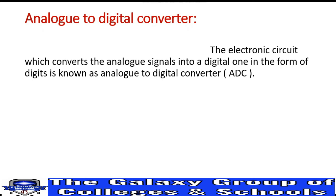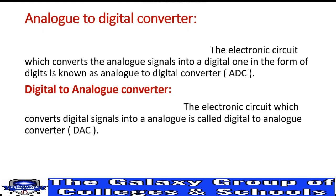Digital to Analog Converter: the electronic circuit which converts digital signals into analog signals is called a Digital to Analog Converter, abbreviated as DAC. We can also be asked the difference between ADC and DAC. That is our lecture for today. We have discussed basic definitions, and in the next lecture we will discuss basic operations of digital electronics. Thank you so much.